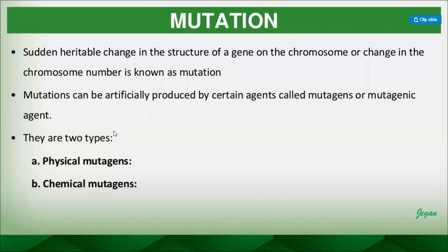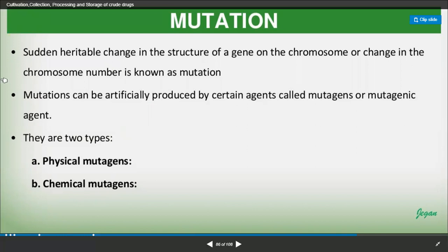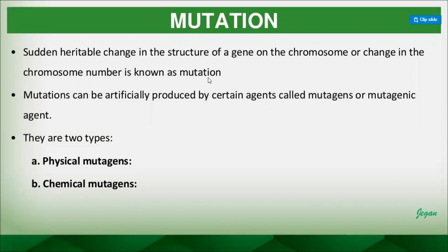The second technique is mutation. Sudden heritable changes in the structure of genes on the chromosome, or changes in the chromosome number, are known as mutation. Changes in the genetic material ultimately affect the fruits, flowers, and other parts of the medicinal plant, ideally resulting in improved quality, size, shape, and quantity of constituents.